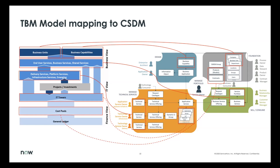The cost pools generally come from the general ledger as shown in the TBM diagram. In CSDM, we have product models and contracts that cover those products from vendors — not every cost pool like labor, but it's a good start. A mature CSDM rollout provides a more pragmatic approach to rolling up costs versus taking information from a general ledger directly. We don't have everything in CSDM — such as projects and investments, which would come from a PPM or agile solution — but we do have many of the entities that map.